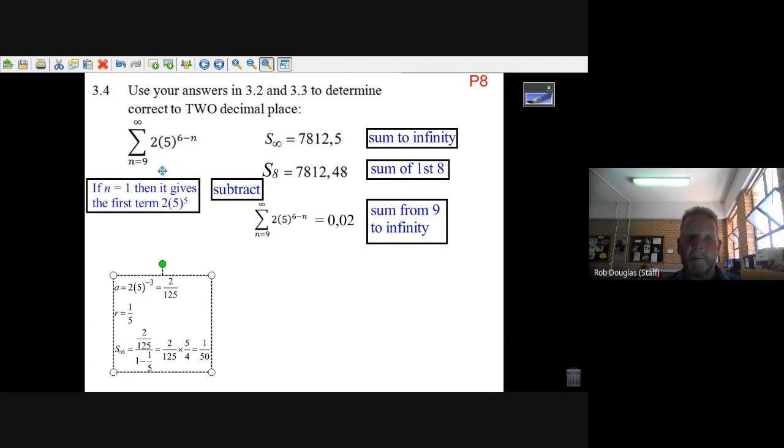They want you to be smart and use these answers. The first one, S∞ = 7812.5, is the sum from 1 to infinity. The next one, S₈ = 7812.48, is the sum from 1 to 8. Well, the difference between the two is the sum starting at n=9 going to infinity: 7812.50 - 7812.48 = 0.02.